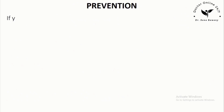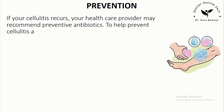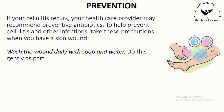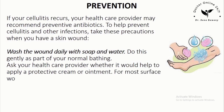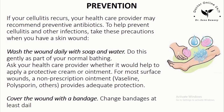Prevention: If your cellulitis recurs, your health care provider may recommend preventive antibiotics. To help prevent cellulitis and other infections, take these precautions when you have a skin wound: wash the wound daily with soap and water, gently, as part of your normal bathing. Ask your health care provider whether to apply a protective cream or ointment — for most surface wounds, a non-prescription ointment such as Vaseline or Polysporin provides adequate protection. Cover the wound with a bandage, change bandages at least daily, and watch for signs of infection.